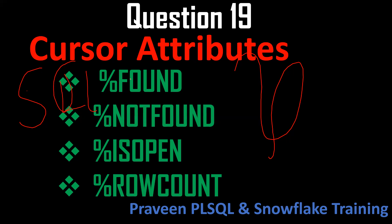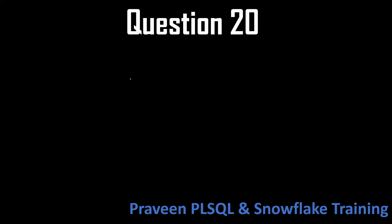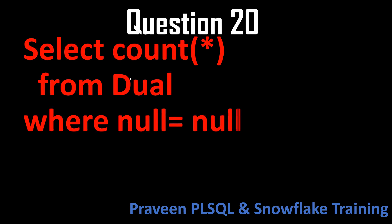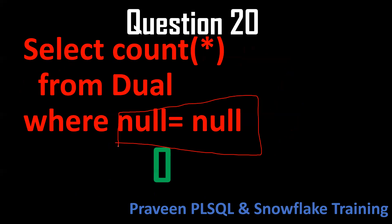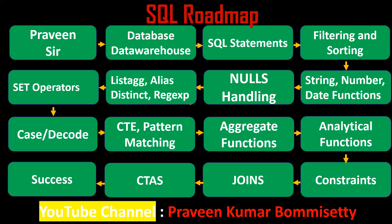Question number twenty: what is the output of SELECT COUNT(*) FROM dual WHERE NULL = NULL? NULL cannot be compared with another NULL using the equals operator, so the output will be zero — no rows returned. NULLs can only be compared using IS NULL or IS NOT NULL.